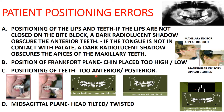Frankfurt's plane positioning errors: the Frankfurt's plane should be parallel to the floor. If the chin is placed too high (Frankfurt's plane too high), the maxillary incisors appear blurred; if the chin is placed too low (Frankfurt's plane too low), the mandibular incisors appear blurred. Teeth positioning errors: if teeth are positioned too anterior, the anterior teeth appear narrower and blurred; if too posterior, the anterior teeth appear wider than normal.